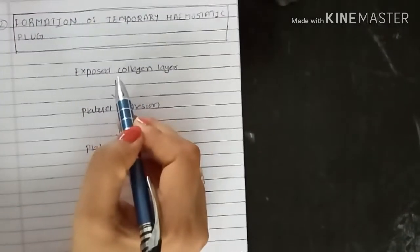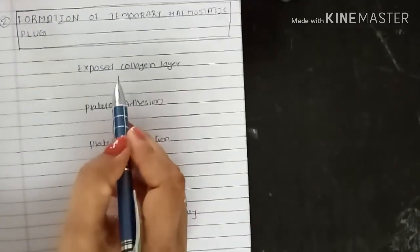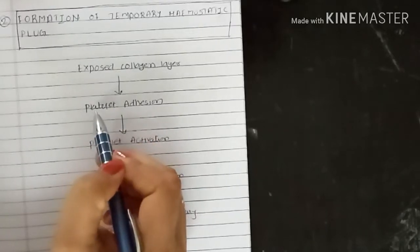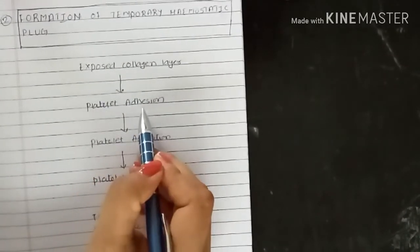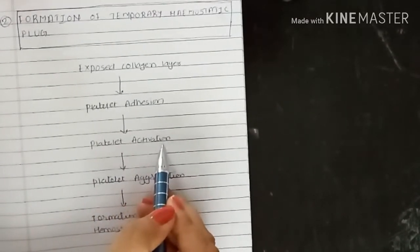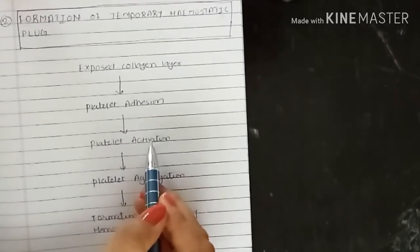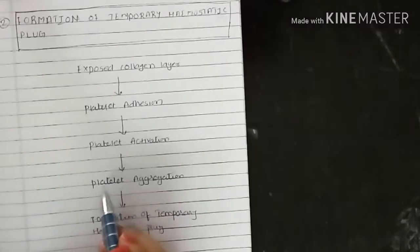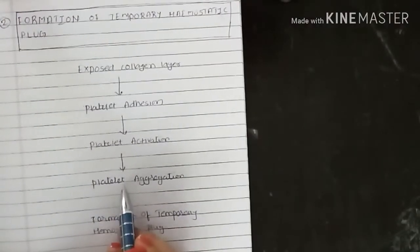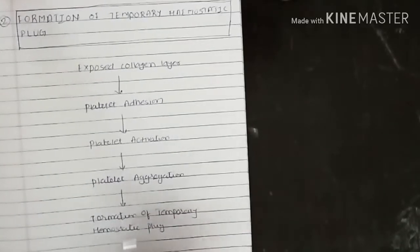The second event is formation of temporary hemostatic plug. Due to injury, the collagen layer gets exposed, which attracts platelets towards it, causing platelet adhesion. After adhesion, platelets get activated. Activated platelets change shape and discharge their granular content. Later, platelets stick to each other, forming platelet aggregation. This way, the temporary hemostatic plug is formed.